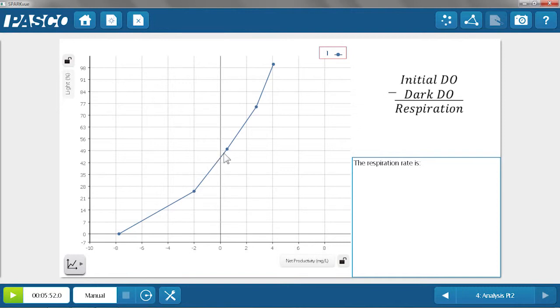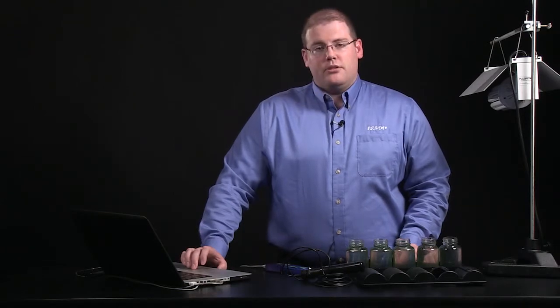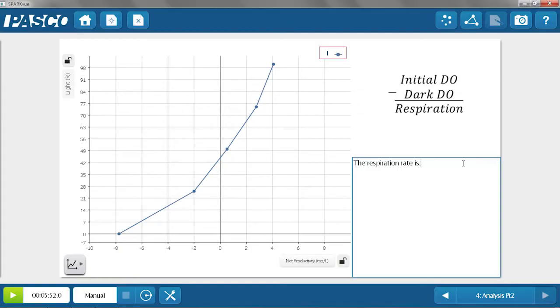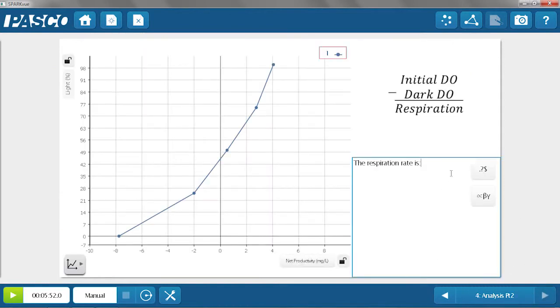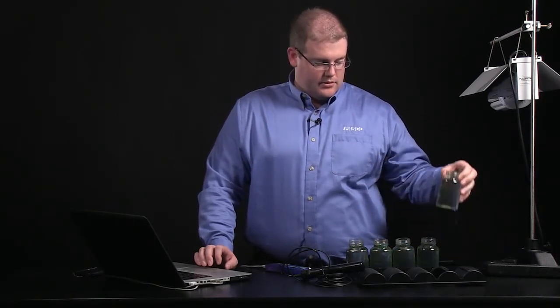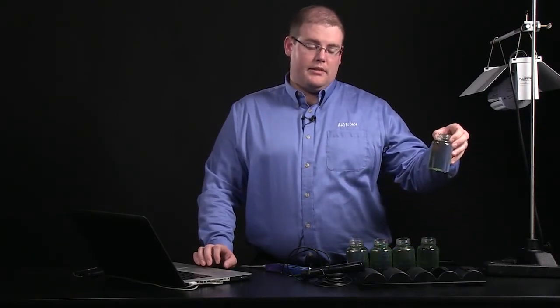In fact, until we got to around 50% of the light getting through to the bottle, we were seeing more respiration than productivity taking place. Finally, we'll calculate our respiration rate, which is the initial dissolved oxygen minus the dissolved oxygen consumed in the dark bottle. We had a respiration rate of about 7.76 milligrams per liter per day. And that's based on just the small amount of algae suspended in this bottle right here.